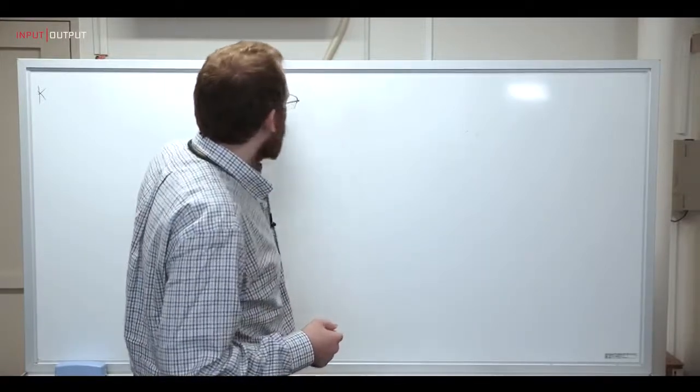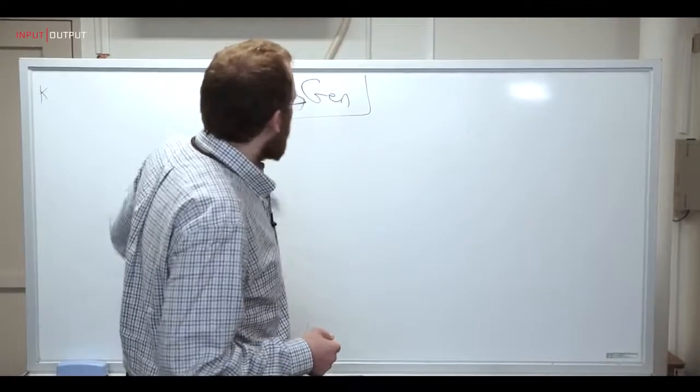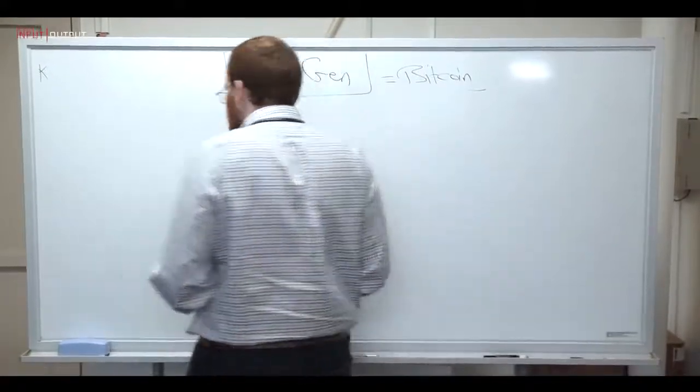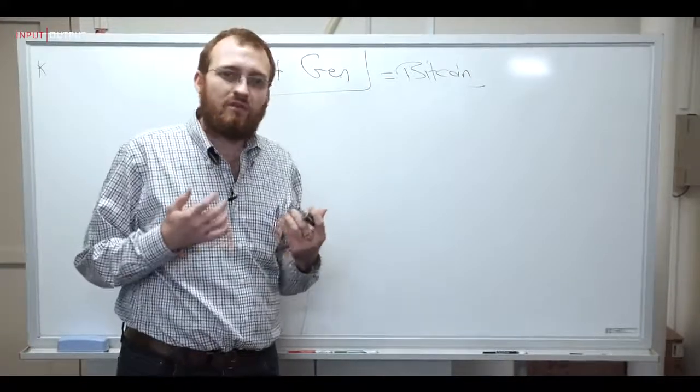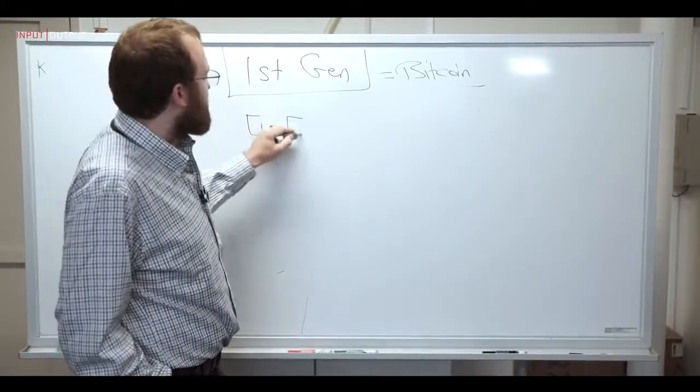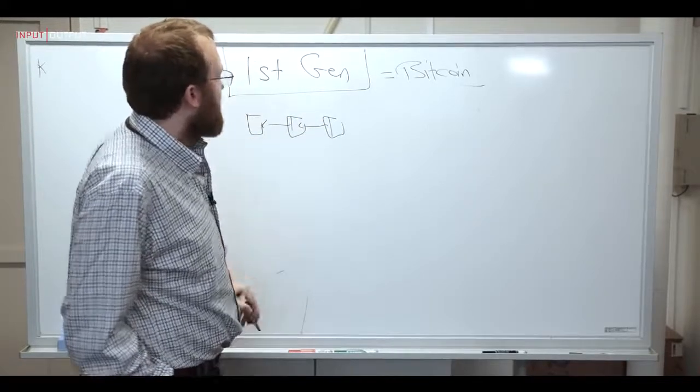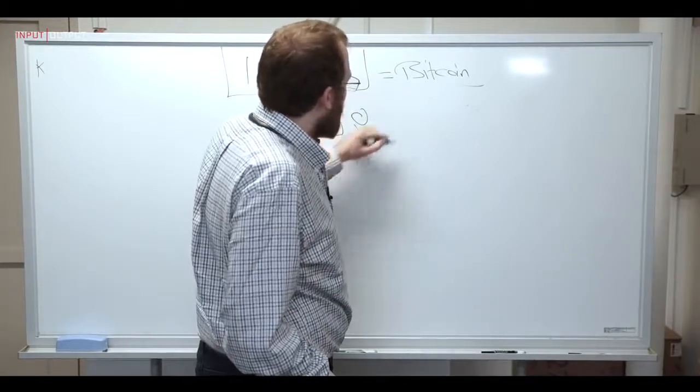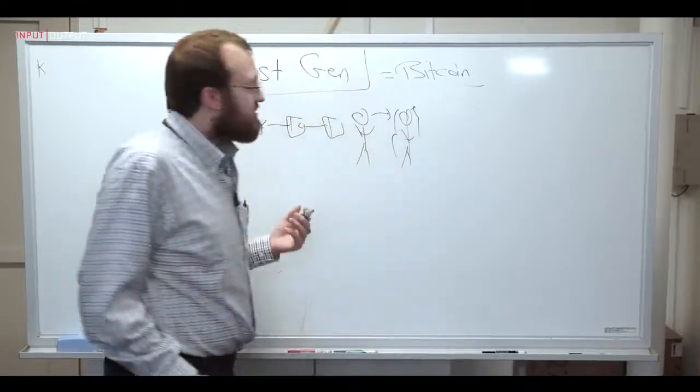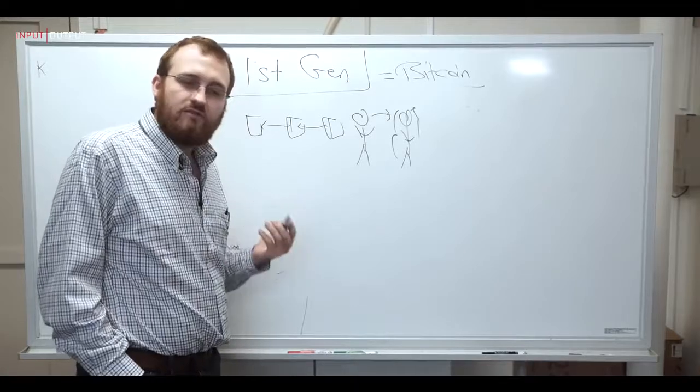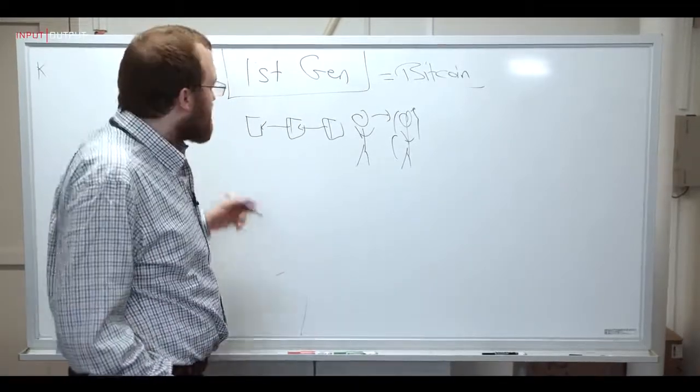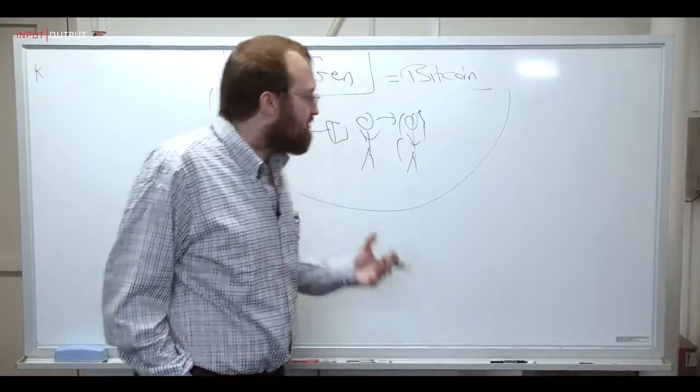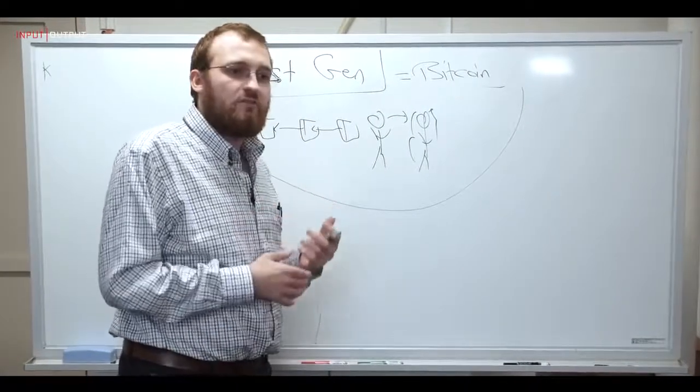So let's talk about the first generation of cryptocurrencies. First-gen is Bitcoin, and the problem that Bitcoin was trying to solve was really could we create a decentralized money? Could we create some sort of token that lives on some sort of decentralized blockchain maintained by people all around the world, and that token would be scarce and tradable. Bitcoin was really the first to bring this all together, and it was a tremendously successful experiment.